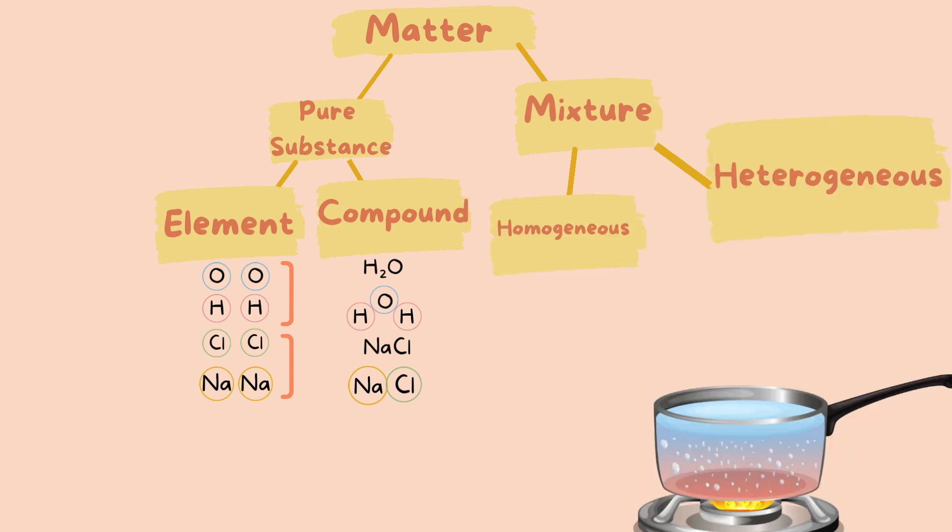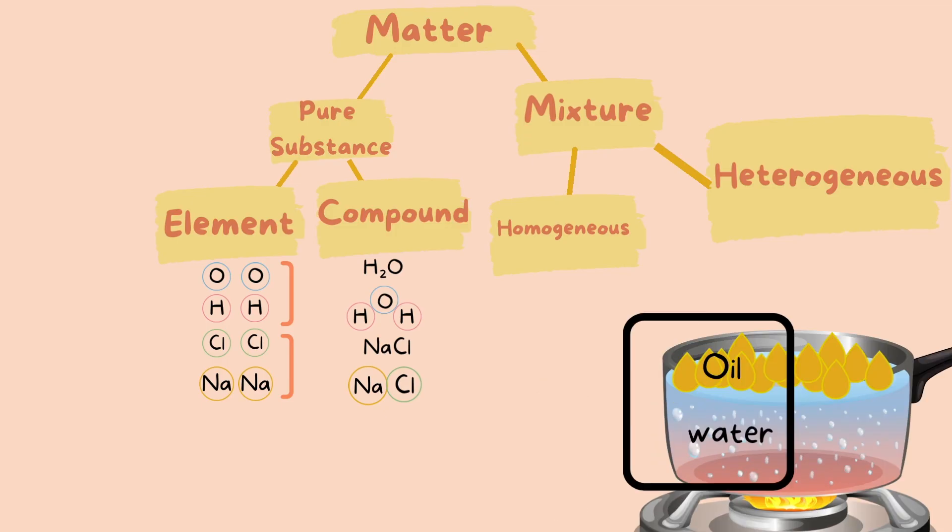An example of a heterogeneous mixture would be oil and water. Let's say here we have some boiling water and we add some oil inside. Eventually, the oil and the water will separate because they don't mix. Oil will stay at the surface and water at the bottom. We can clearly see the boundary line between the two substances. That makes this heterogeneous.